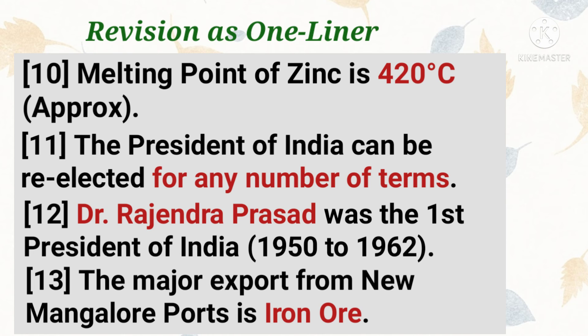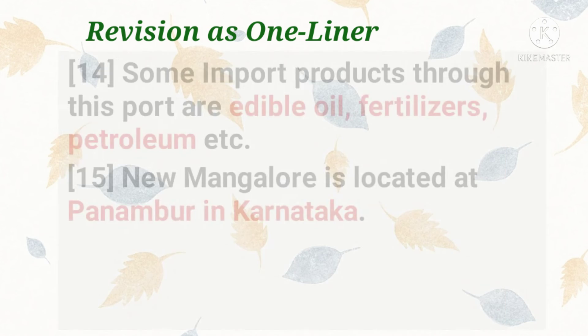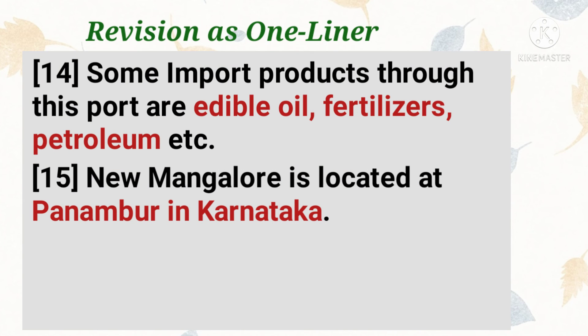Number 12: Dr. Rajendra Prasad was the first president of India. Number 13: the major export from New Mangalore port is iron ore. Number 14: some import products through New Mangalore port are edible oil, fertilizers, and petroleum. Number 15: New Mangalore is located at Panambur in Karnataka.